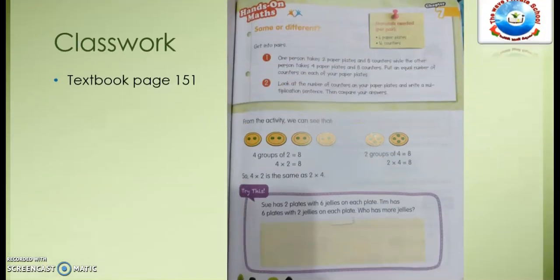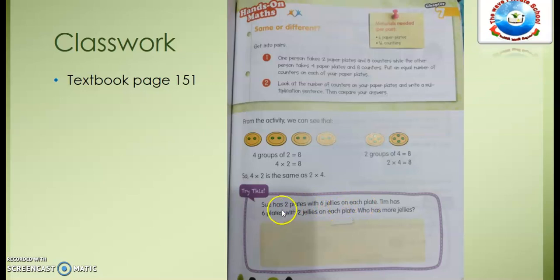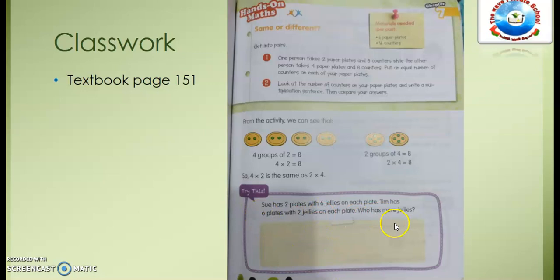That example is related to page 151 of your textbook. Please open it. The question says: Sue has 2 plates with 6 jellies on each plate, and Tim has 6 plates with 2 jellies on each plate — who has more jellies? You can draw the plates and jellies for Sue and for Tim, then write who has more jellies. Maybe they have the same, or maybe Tim has more — you need to find it.